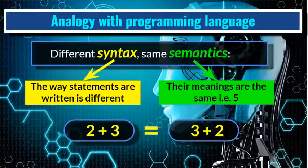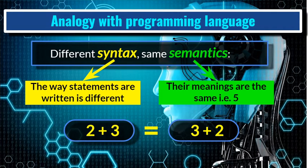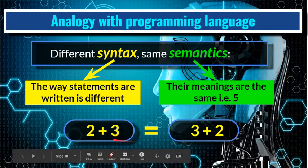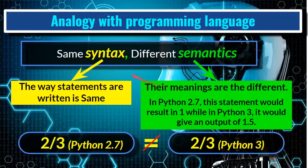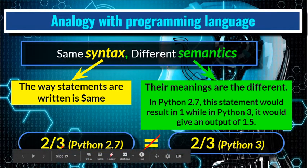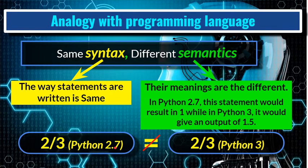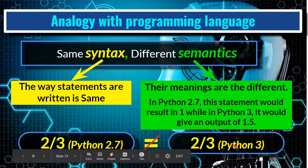Here is an example: 'two plus three' is written in two different ways — '2+3' and '3+2' — different syntax, but they give the same result of five, so different syntax but same semantics. Another example: the same statement '2/3' is written in Python 2.7 and Python 3. Same syntax, but it creates different meanings — in Python 2.7, 2/3 gives the result 0 (integer division), while in Python 3 it gives 0.5 — a real number. This is the analogy with programming language.